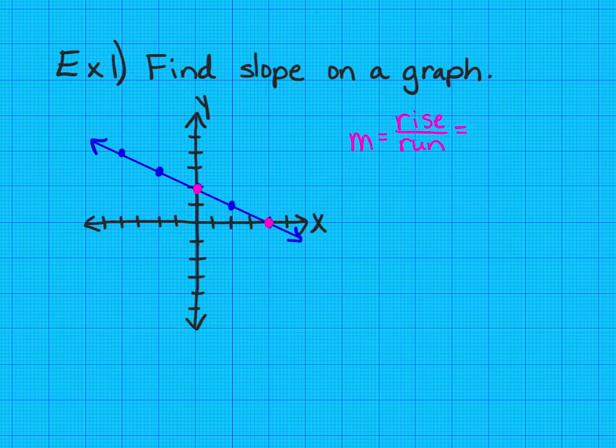We're going to start from the lowest point and see how far up we go. We go up two units, so the rise is two. And then we see how far left we go to reach the other point. We go left four units. So negative four, because left is going negative on the x-axis, and that was the run.